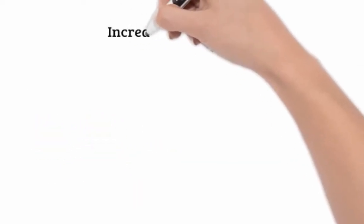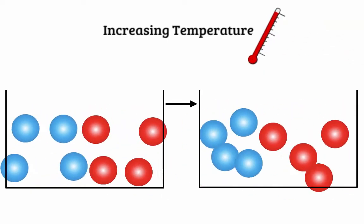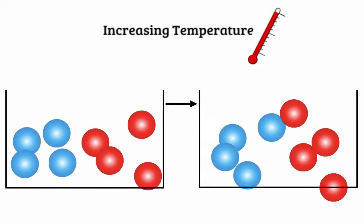There are five ways to speed up a chemical reaction. The first is to increase the temperature. When we increase temperature, we increase the kinetic energy of the particles. This means they will move around more and quicker.